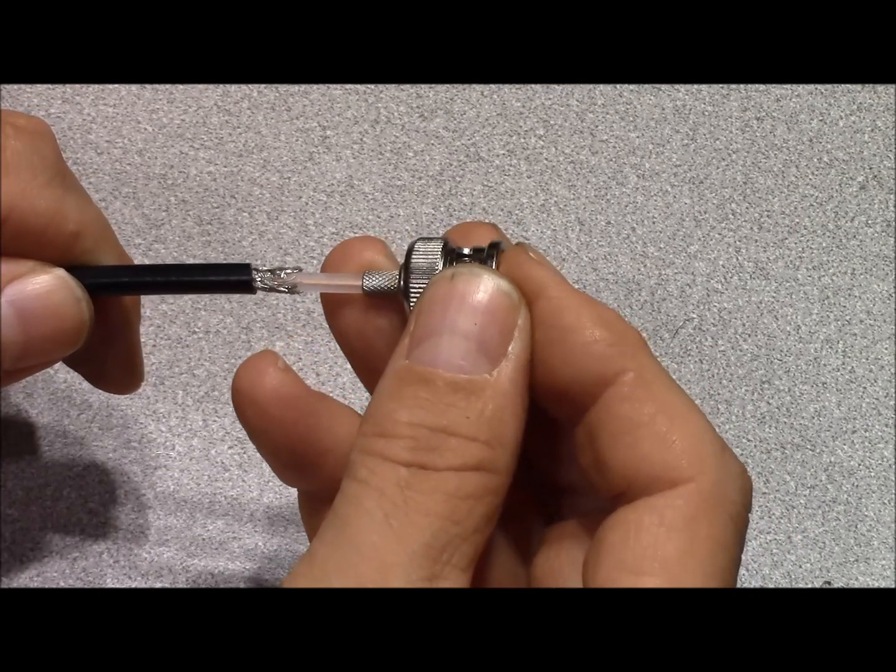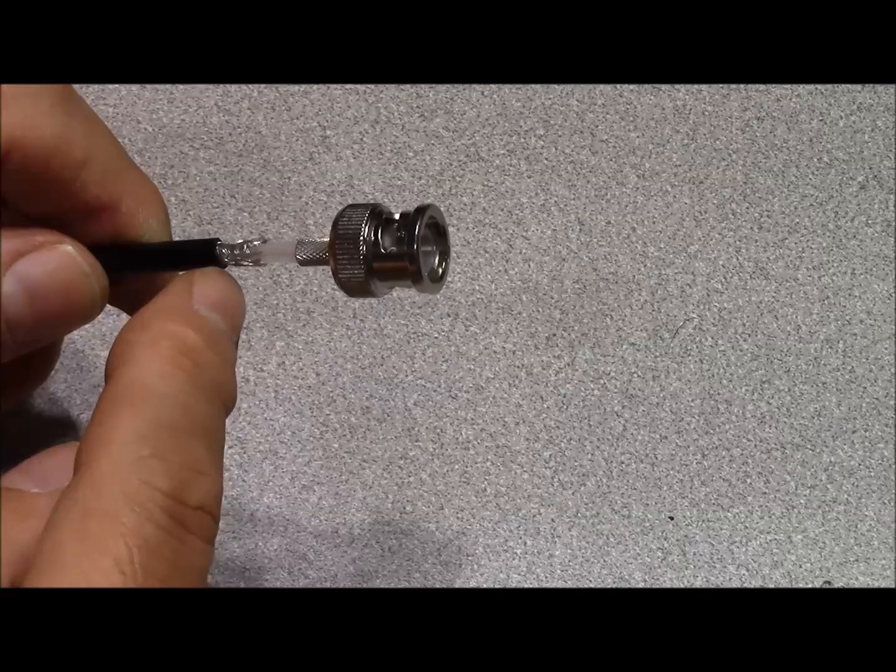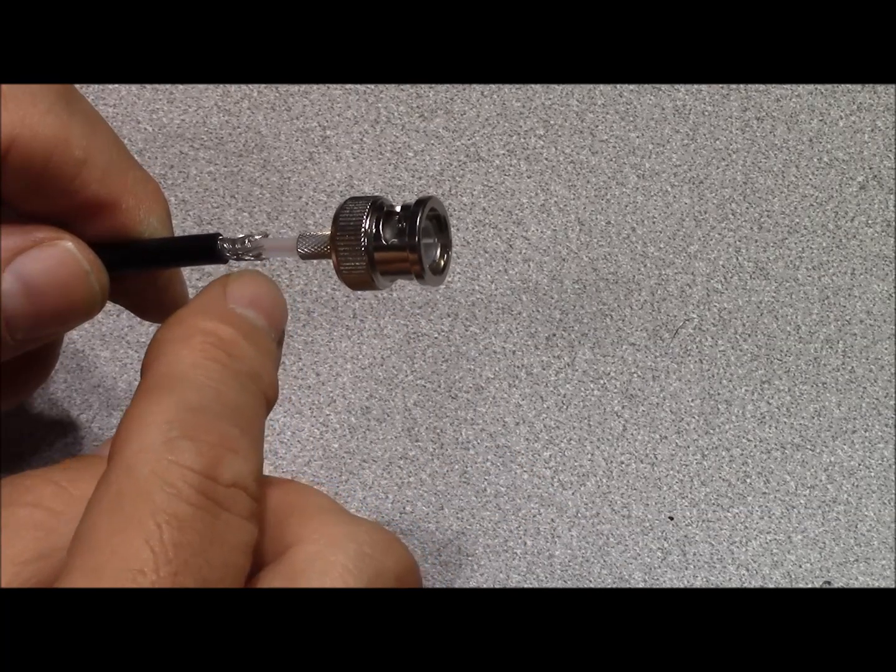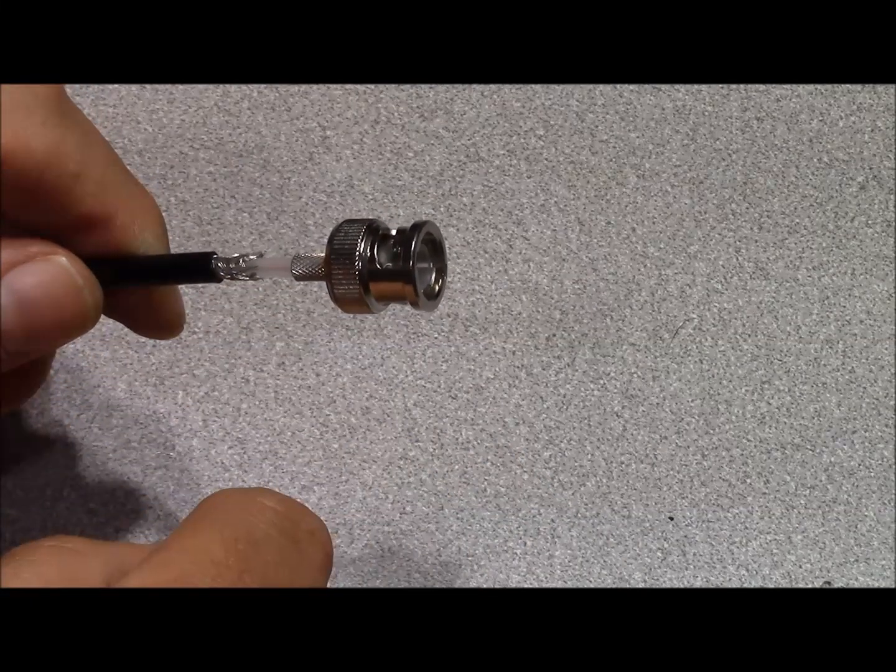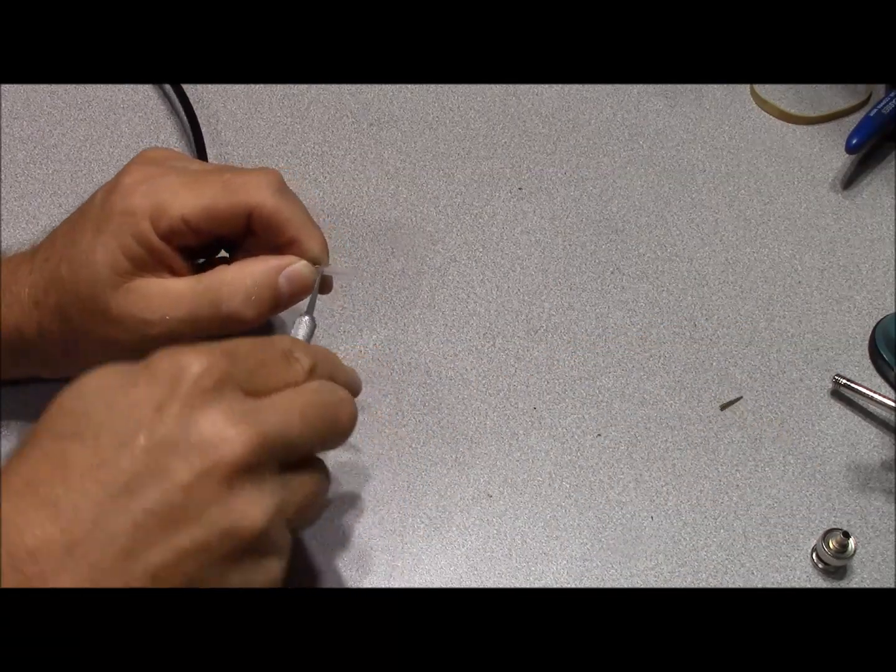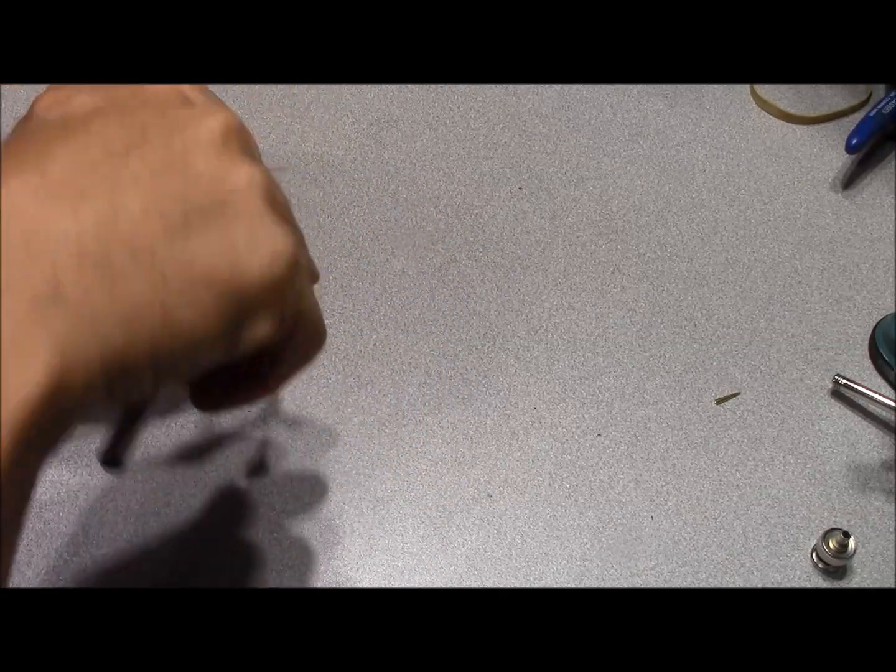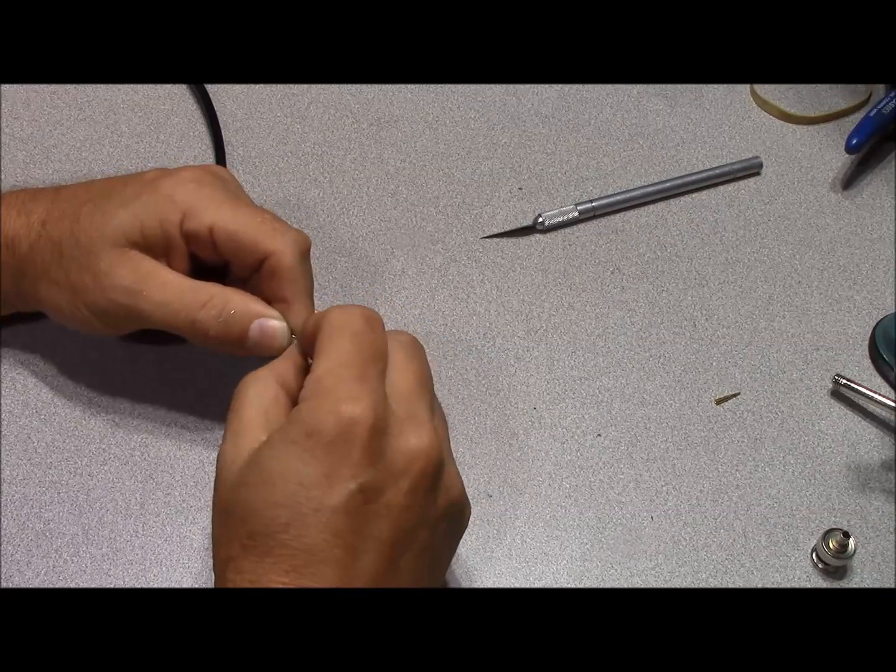We need to ascertain how much of our dielectric we need to remove from our cable. And we want the tail of the connector to rest right up against here. So we need to remove this much from our dielectric. Remove our razor blade again, we'll score and remove our dielectric.